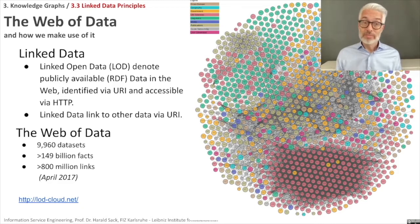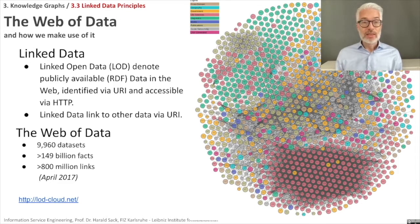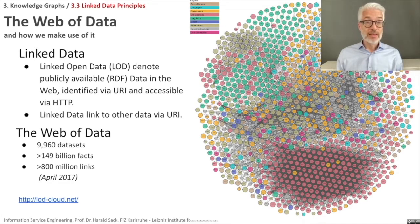Linked data — as the name suggests — links to other data and data sets via URIs, which is the reason why they create a huge network. During the last count, which was in 2017, they counted roughly 10,000 large data sets containing around 150 billion facts and 800 million links among them — already something substantial to work with.